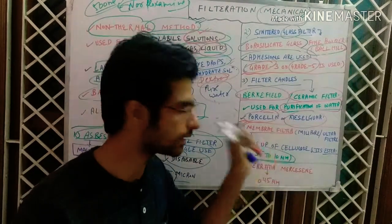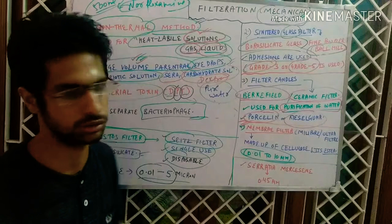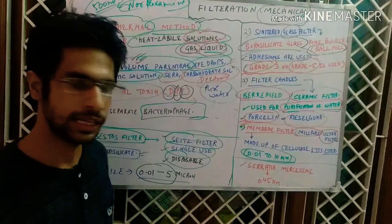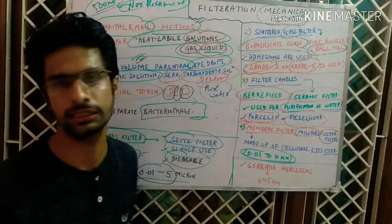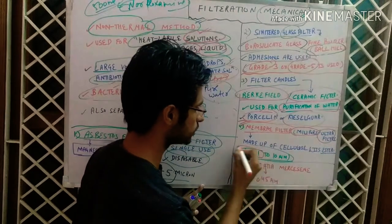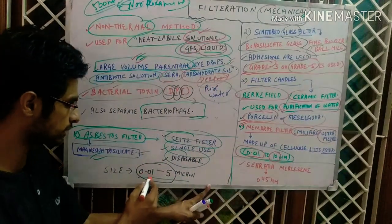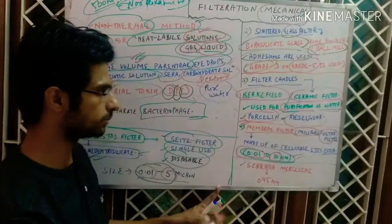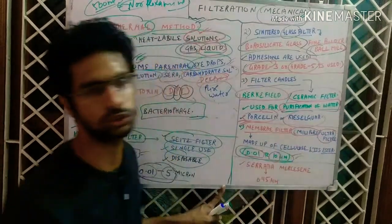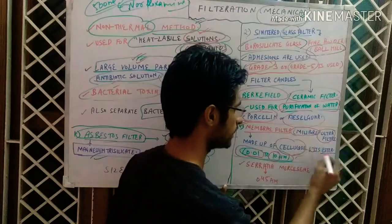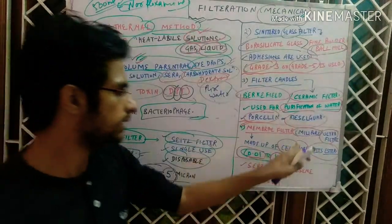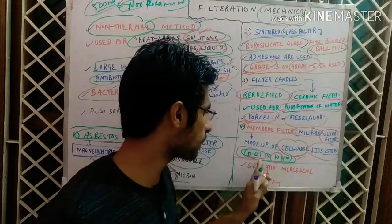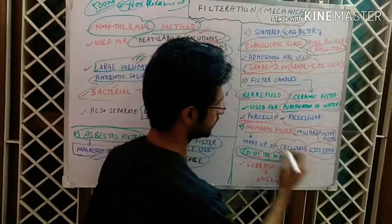The membrane filter is the most important type, with nearly 100% of questions in GPAT or NIPER exams covering it. It is also known as the millipore filter or ultra filter. Even the smallest microorganism cannot pass through it. Its pore size ranges from 0.01 to 10 microns (also stated as 0.01 to 5 microns). It is made up of cellulose and cellulose esters. Millipore and ultra filter are synonymous names. Remember the pore size: 0.01 micron.